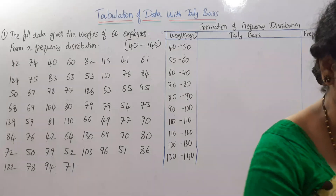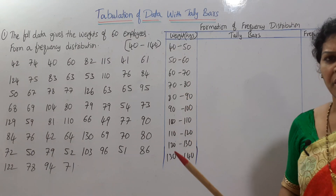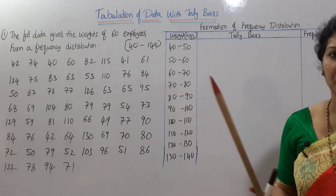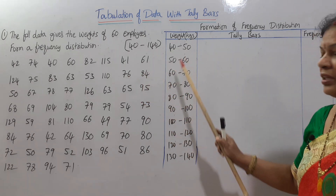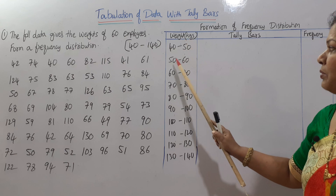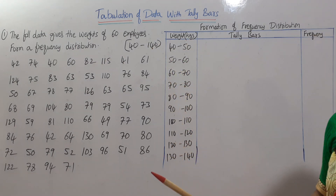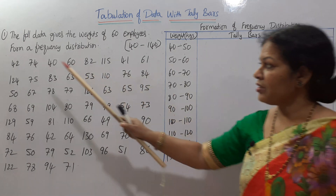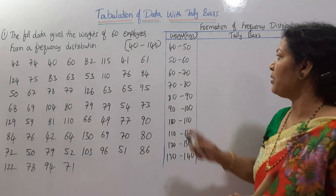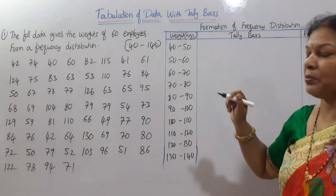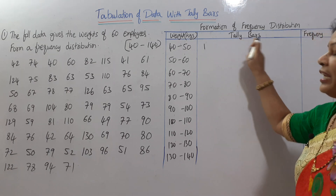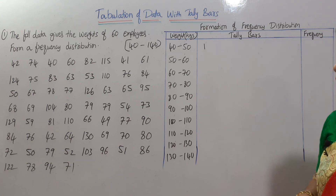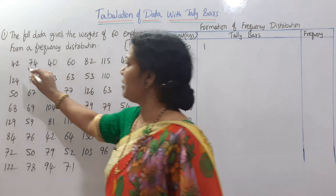So the class intervals are identified. We take any class interval difference — 5, 10, or 20; I've taken 10 here, giving us 40 to 50 up to 130 to 140. Now each and every number we have to place. The first one is 42 — 42 lies between 40 to 50, so I put a tally bar here. A tally bar means one mark like this.